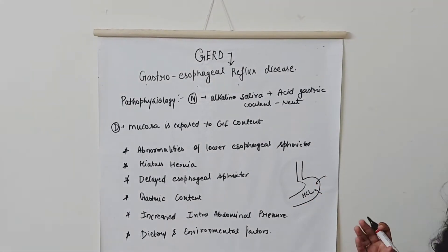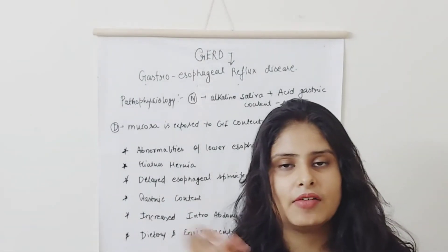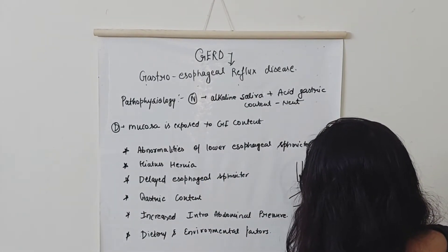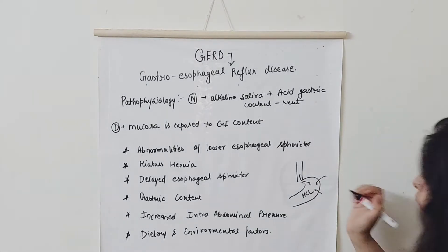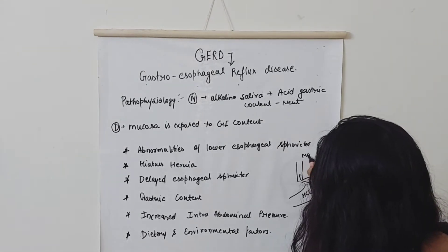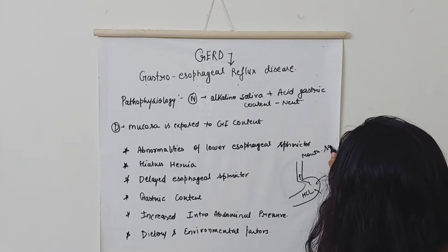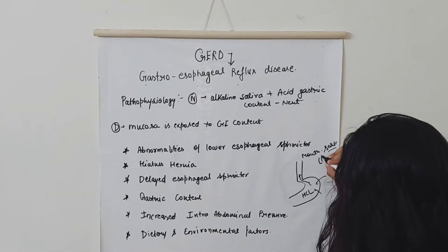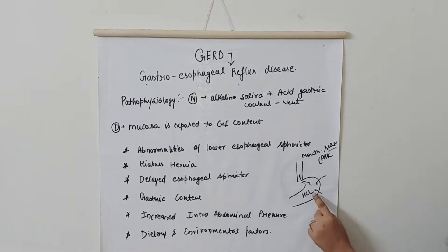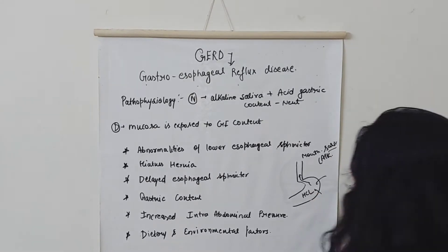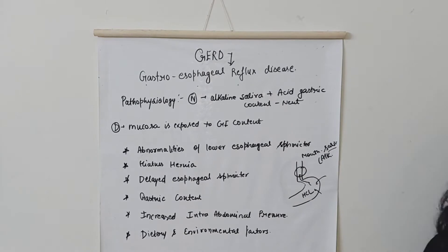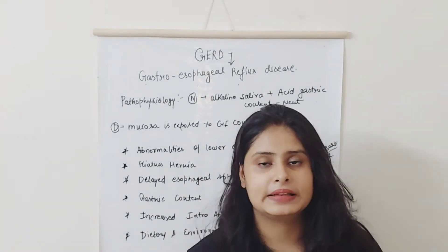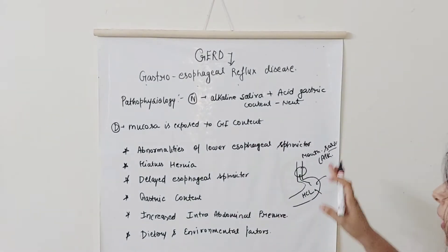Everyone knows that there are acids and HCl in the stomach. Now, when stomach contents reflux up into the mouth, saliva is present. Saliva is alkaline, while gastric content is acidic. When the refluxed content mixes with saliva, it gets neutralized, so you don't get many symptoms normally.